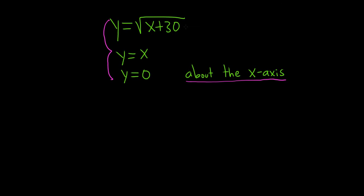So first, it's good to think about what these graphs look like. So the square root of x plus 30 is the square root function shifted to the left 30 units. So it looks something like this. And then y equals x looks something like this. And then y equals 0 is a horizontal line. So we basically have this region here.